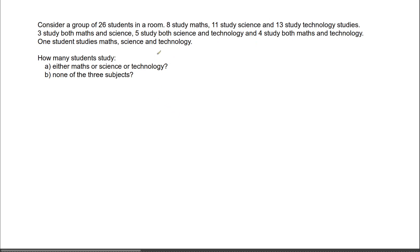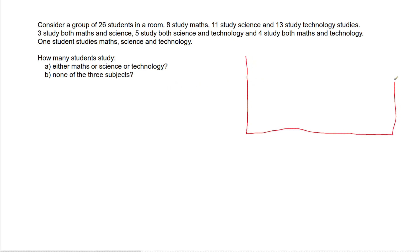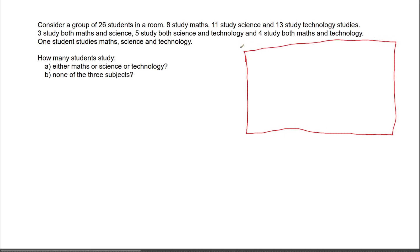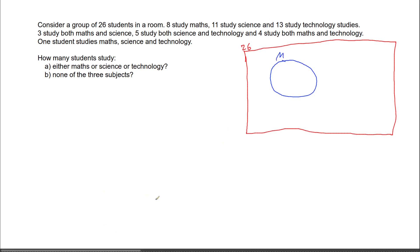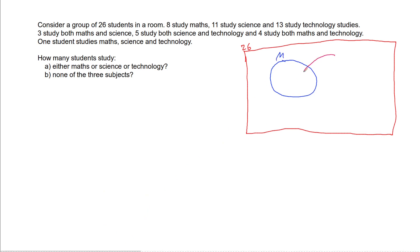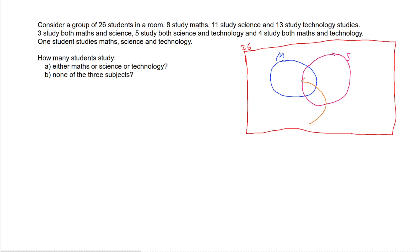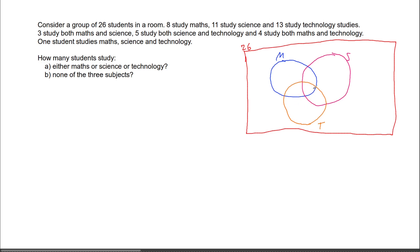This is a Venn diagram question, because of how all the information is put together. So one way to approach this is to use a Venn diagram. I've got 26 students, so many of them are going to study maths, so many science, and so many technology. I've made sure that all my circles are crossing over so that I can get all the combinations there are.